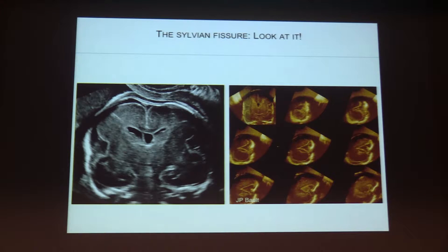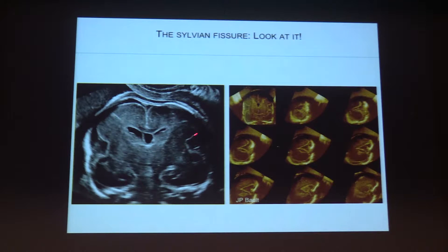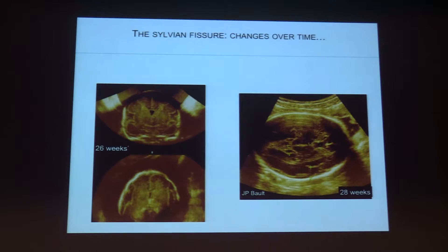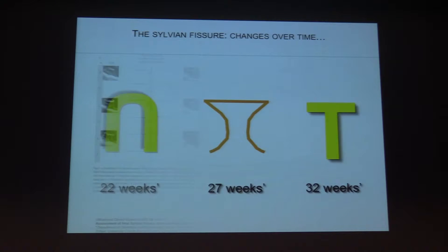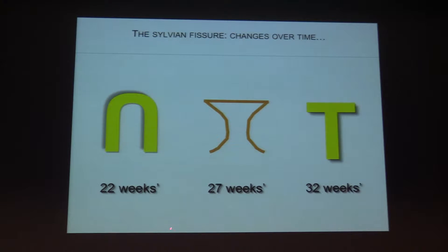The coronal plane offers a better view of the Sylvian fissure, as we know from postnatal MRI where the coronal view is very important. With ultrasound, I encourage you to practice recognizing the aspect of the Sylvian fissure. During gestation this fissure will have different shapes and will enlarge: at 22 weeks you have a U-shape, at 27 weeks a quasi-complete digging of the fissure.